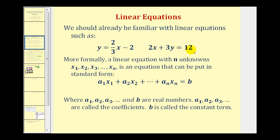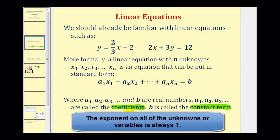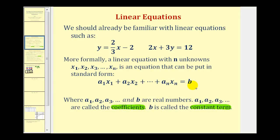To define a linear equation more formally, a linear equation with n unknowns x sub one, x sub two, all the way through x sub n, is an equation that can be put in standard form. Here x sub one, x sub two, all the way through x sub n, and b are real numbers. The a's are called the coefficients and b is called the constant term. Notice the a's are being multiplied by the unknowns, and b is the number without the variable.